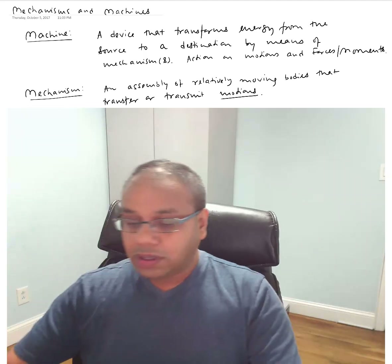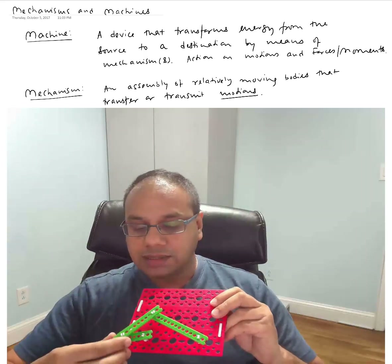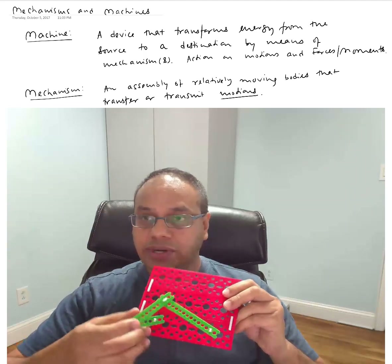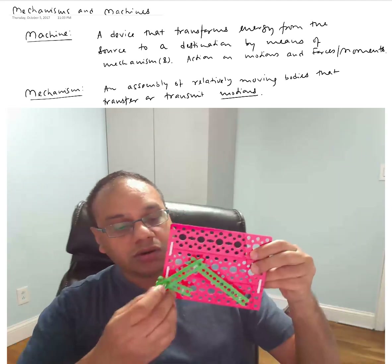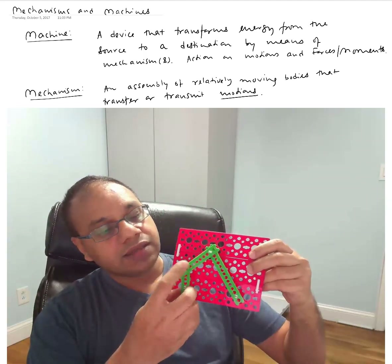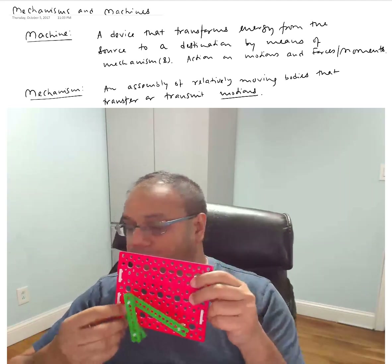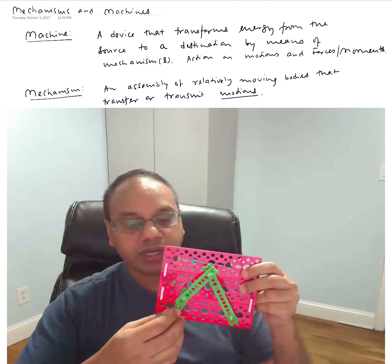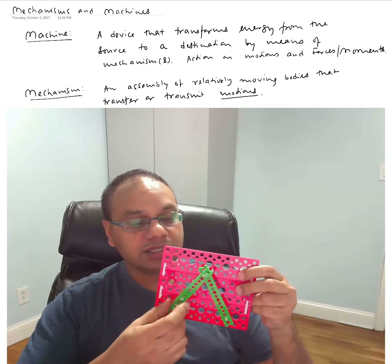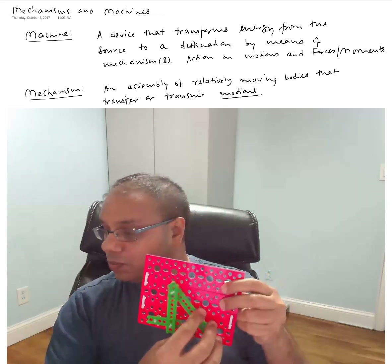A slightly more complicated example of a mechanism is what we call a four-bar linkage system. As I rotate this link, you can see the other two links are rotating as well. This is called a four-bar mechanism because you have the ground, which is the red plate, and a second, third, and fourth link — four links connected together that give rise to a particular kind of motion. You can imagine a motor connected to the shorter green beam giving rise to an oscillatory motion of the follower or output link.